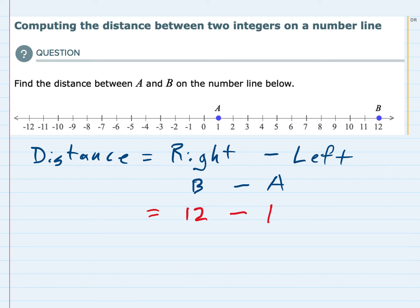Again, just to note that if a would have been a negative value, we would have been subtracting a negative. But in this case, we're subtracting a positive because a is 1. So the distance between those two is 12 minus 1, or 11.